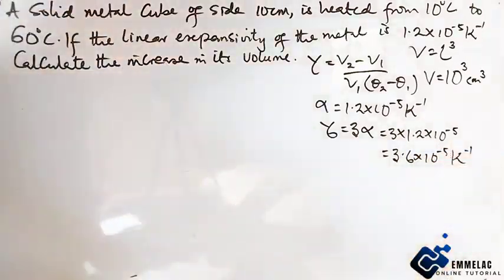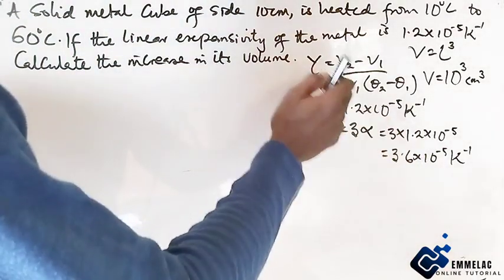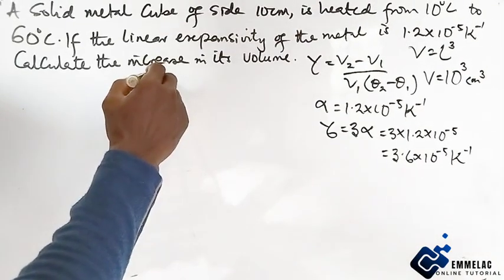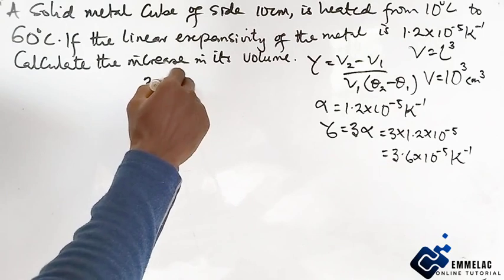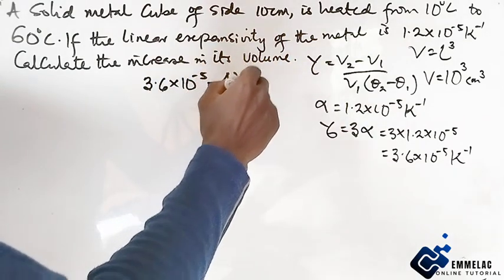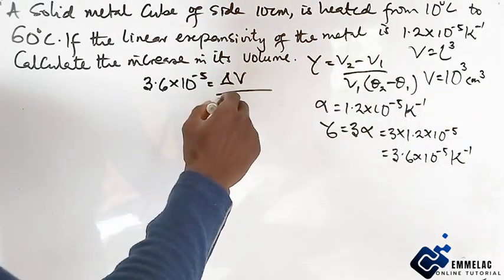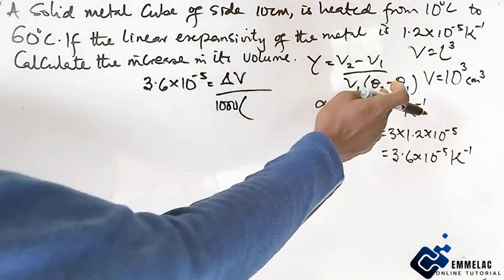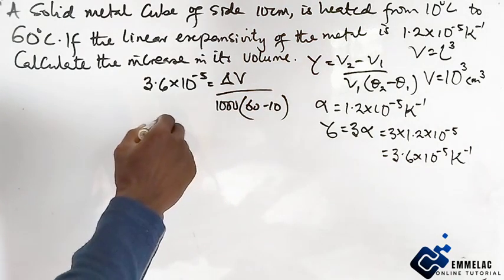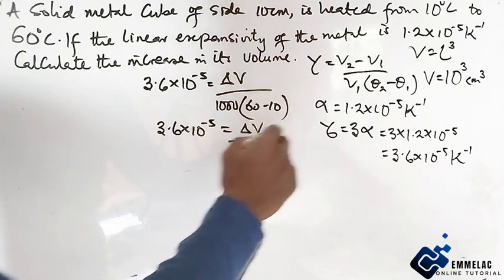Now let us implement this to the above equation. So here we have 3.6 times 10 raised to power minus 5, which equals change in volume over 1000 times 50. So here we have 3.6 times 10 raised to power minus 5 equals change in volume over 1000 times 50.